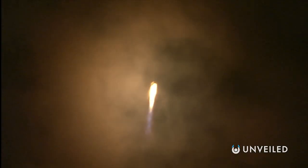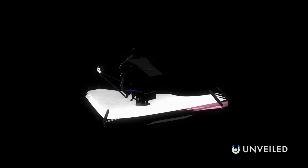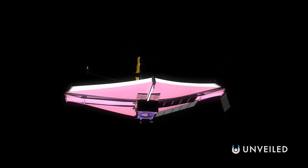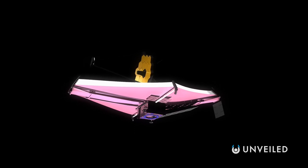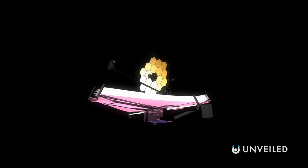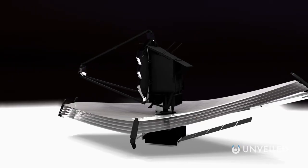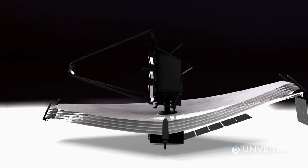The unfolding of the sunshield once Webb reaches its target location will be a crucial moment in the mission. At launch, it will be tightly packed to ensure a streamlined payload, but then, when it arrives at its eventual home hundreds of thousands of miles away from Earth, it will fan out, and hopefully without any problems. Incredibly, some components of the Webb will still require extra cooling to perform, even after the sunshield, but the sunshield does the vast majority of the work.